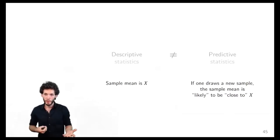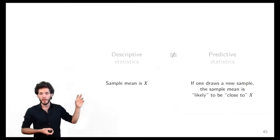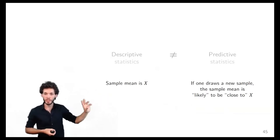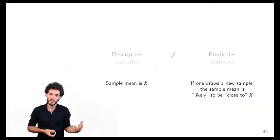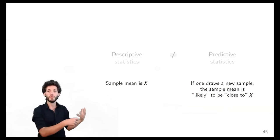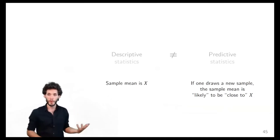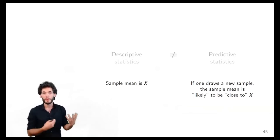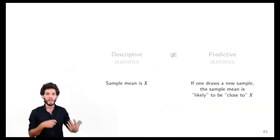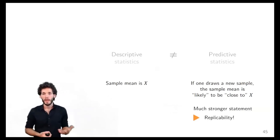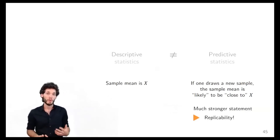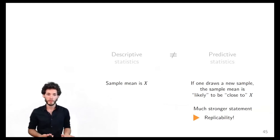Put differently: the sample mean x̄ is a description. A prediction allows us to make a statement such as: if one were to draw a new sample, then the sample mean will likely be close to some value x. This is a much stronger statement, and it's what we need to do to argue about replicability.